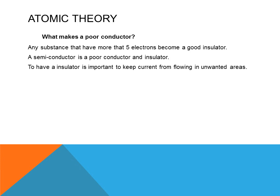What makes poor conductors? Any substance or material that has more than five electrons becomes a good insulator. A semiconductor is a poor conductor and a poor insulator. To have an insulator, it is important to keep current from flowing into unwanted areas. Wires are normally coated with some type of insulation material, such as rubber or plastic, which will impede the flow of current through it.